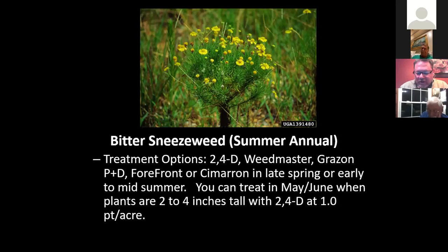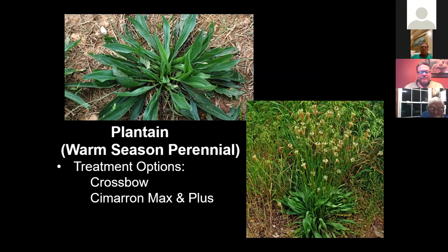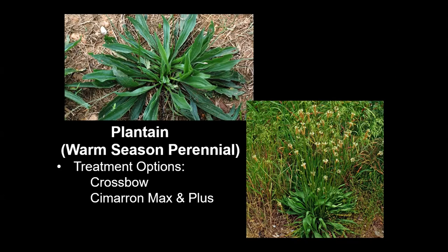Plantain — Grazon is labeled for plantain, but I've had people say they don't get control with Grazon anymore on plantain. So my first recommendation now is Crossbow. I would use that on plantain. Again, it's a warm season perennial, so you've got to use a herbicide — it comes back from the same root system every year.